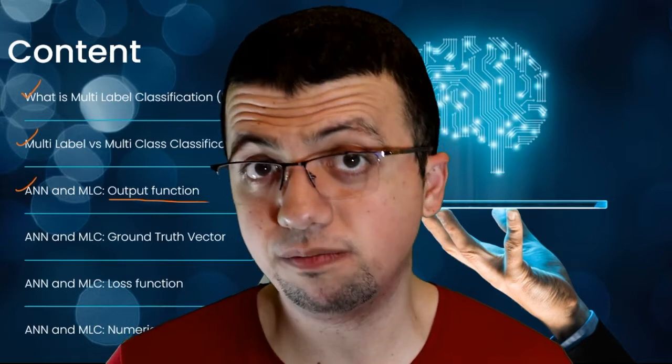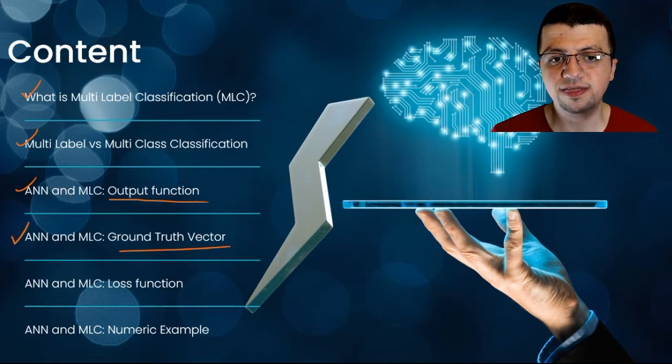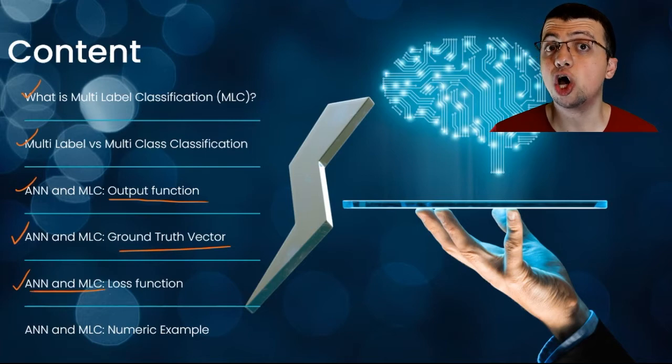Hello everyone and welcome to ML Dawn. So far on our list, we have come a long way. We've talked about all of these three elements, including the ground truth vector representation. In this video, we're going to be talking about the fifth element, which is artificial neural networks for multi-label classification, the loss function.